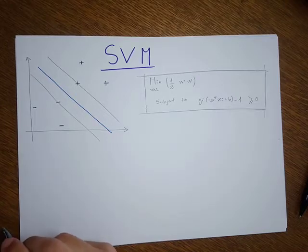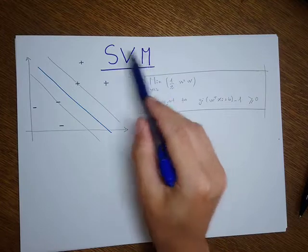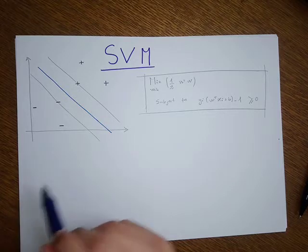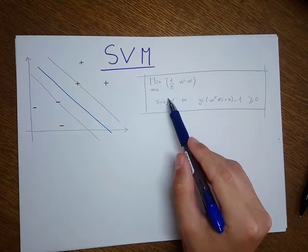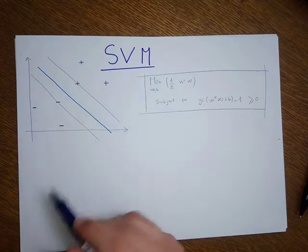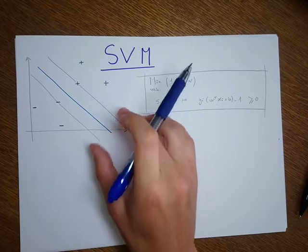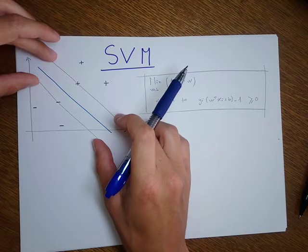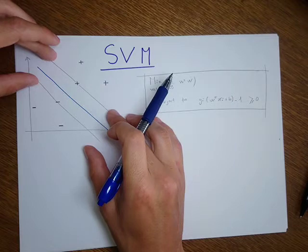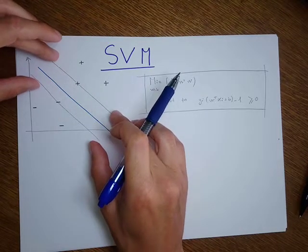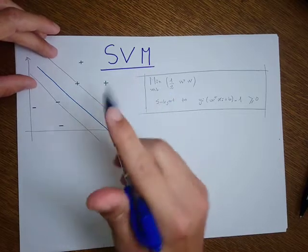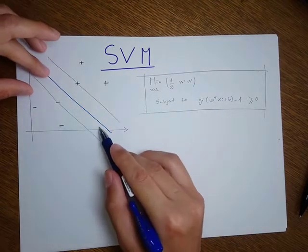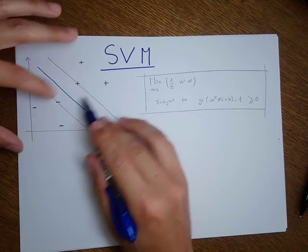Welcome back. In the previous videos I talked about the SVM — its idea and how to develop this idea theoretically, ending up with an optimization problem. The main idea is to find the widest margin or widest street that would separate my data linearly. Once I find this widest margin, the decision boundary is in the middle of it, and in this way I separate my training samples perfectly with a line.